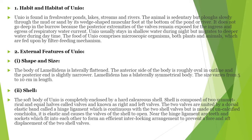Unio belongs to the class Bivalvia, or Lamellibranchia. Unio is found in freshwater ponds, lakes, streams, and rivers. The animal is sedentary but ploughs slowly through the mud and sand by its wedge-shaped muscular foot at the bottom of the pond or river. It does not go deep in the burrow because the posterior extremities of the valve remain exposed to the ingress and egress of the respiratory water current.